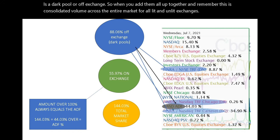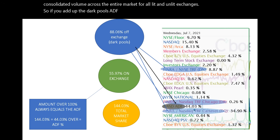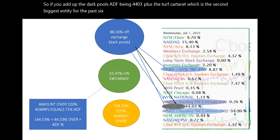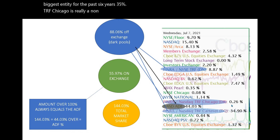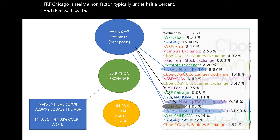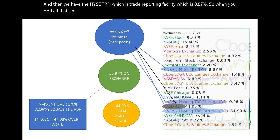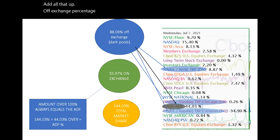If you add up the dark pools — ADF being 44.03%, plus TRF Carteret, which is the second biggest entity for the past six years, at 35%. TRF Chicago is really a non-factor, typically under half a percent. And then we have the NYSE TRF — Trade Reporting Facility — which is 8.87%. So when you add all that up, the off-exchange percentage for yesterday, and most days, is 88.06%.